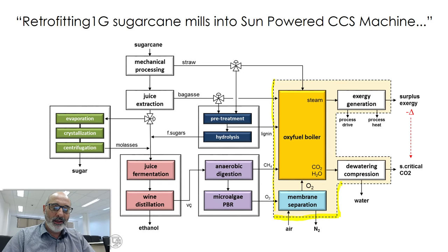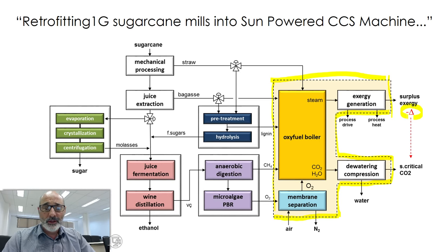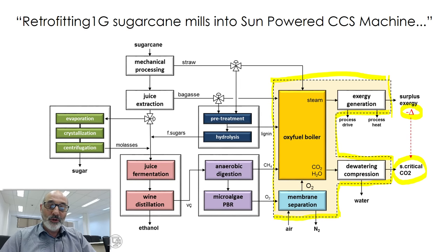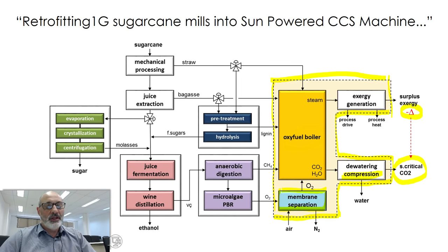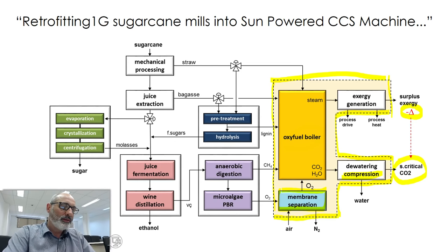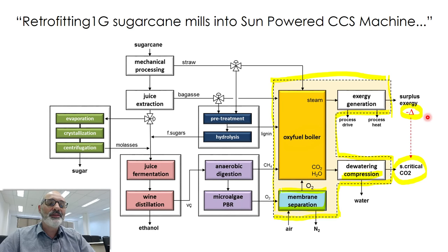We've already made the modifications to transform this to a supercritical CO2 producer. The idea is to take some amount of energy and invest it to produce supercritical CO2. This energy delta is used for the most part in oxygen separation for the oxy-fuel boiler and also to compress CO2 to the pressures corresponding to supercritical CO2. The whole point for the process to be technically feasible is that the remaining surplus is still positive.